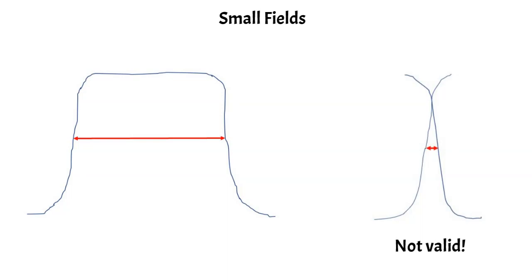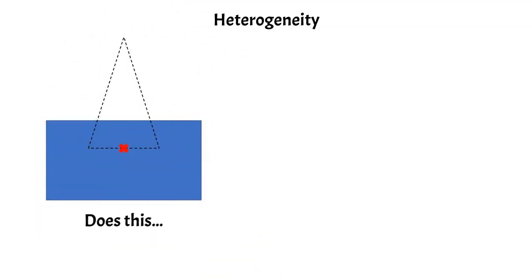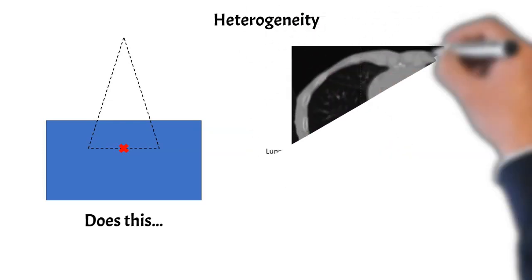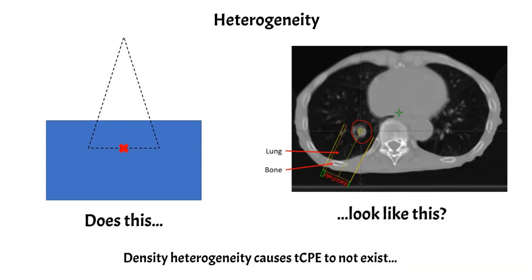Another major issue with the hand calc formalism is heterogeneity. The typical hand calc geometry assumes a beam normally incident on a flat phantom surface, but a real example lung case with a right posterior oblique beam treating a lung tumor has lung, bone, tumor, skin, and various tissues in the beam path. There are also many different densities in the beam path, and that density heterogeneity causes charged particle equilibrium not to exist. Transitioning from lung to tumor — a lung-soft tissue interface — is reminiscent of the air-phantom interface, producing the same buildup effect at the periphery of that tumor or soft tissue.